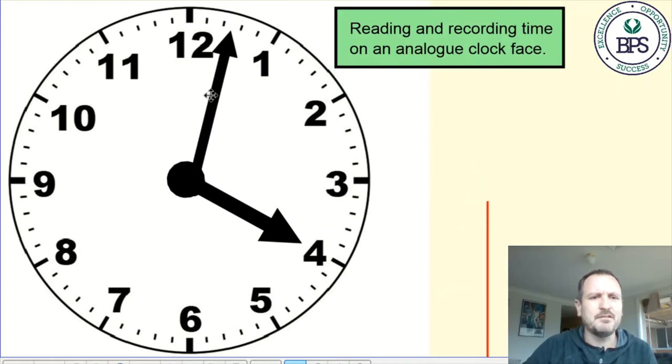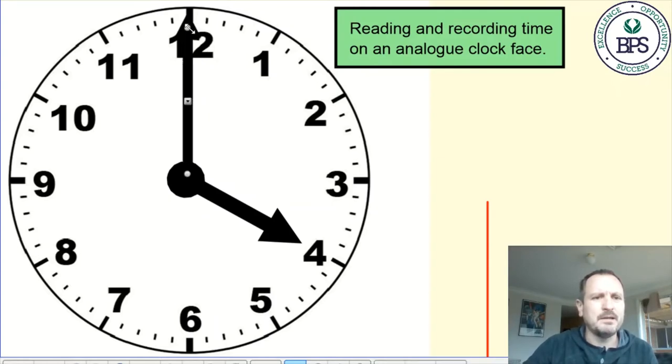You'll often find that if you have those markings around the outside of the clock, the minute hand will actually point to those small markings and go straight through the big numbers written on the clock. As you can see here it goes through the 12. So this one is indicating the minutes that have passed.